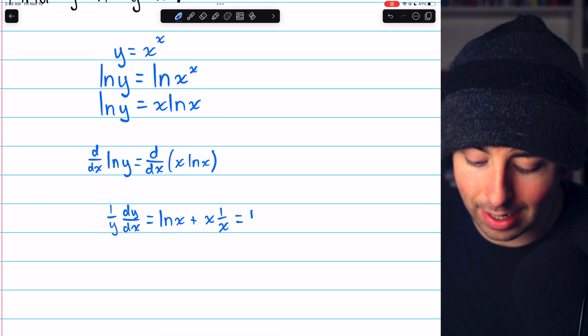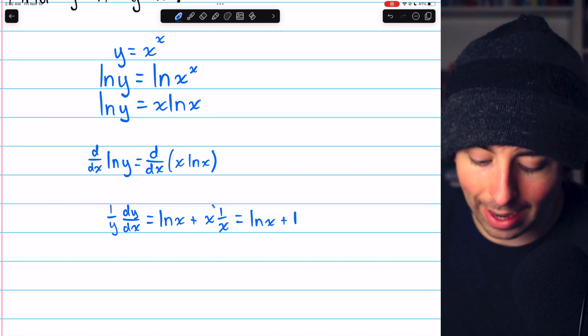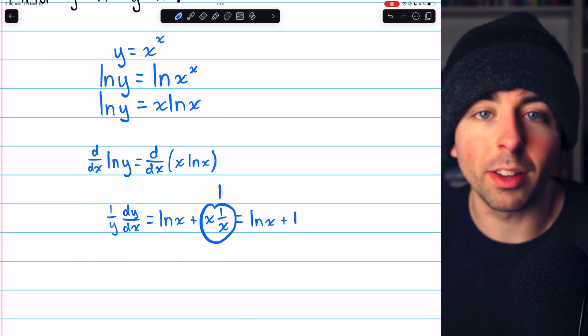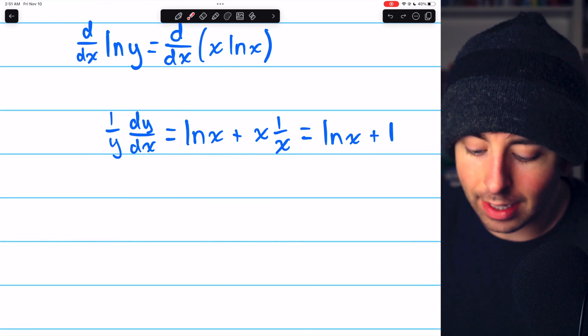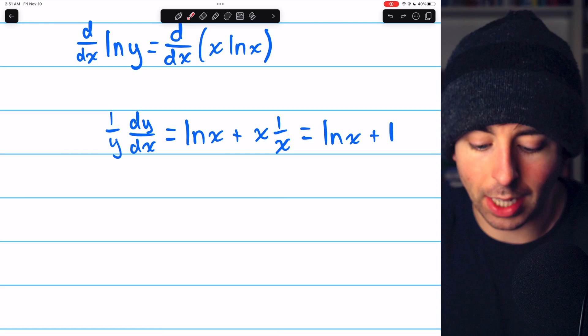This, of course, is log x plus 1 because x times 1 over x is just 1. Now, what we have is that 1 over y dy dx equals ln x plus 1.